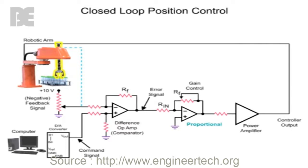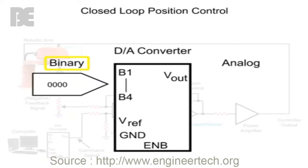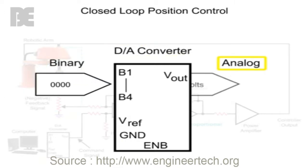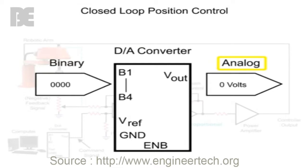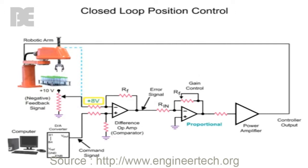To move the robotic arm to a specific position, a command signal from the computer starts the motion sequence. The analog command signal voltage produced by the digital to analog converter determines the position of the arm. The potentiometer attached to the robotic arm indicates the actual position, and the variable voltage produced is referred to as the feedback signal. When the feedback signal voltage matches the command signal voltage, the arm has reached the desired position.